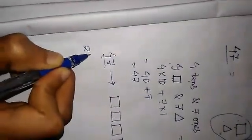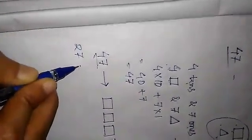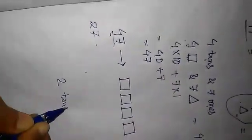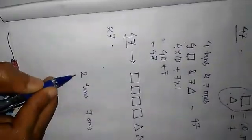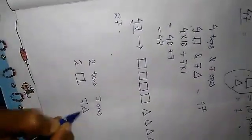So students, for example, we have number 27. 27 is equal to 2 tens and 7 ones, which means 2 squares and 7 triangles.